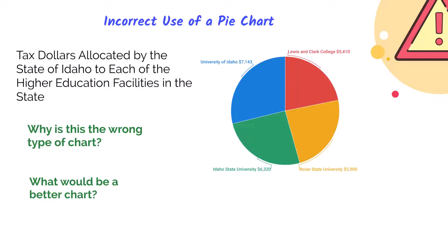Some other issues with pie chart usage include too many categories or slices — a good rule of thumb is around seven categories maximum. Another issue is that pie charts encode values in the arc length of each slice, and the human eye can have a hard time reading angles. Without data labels, you would have a hard time telling which university had the higher funding per student. With a bar chart, it would be much easier to see which bar is tallest.